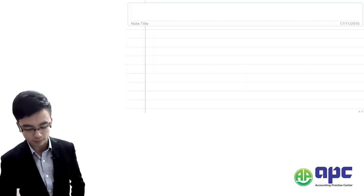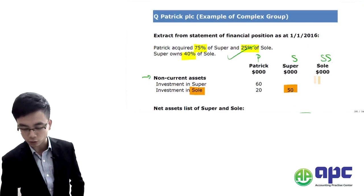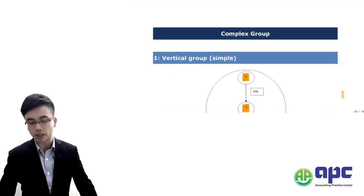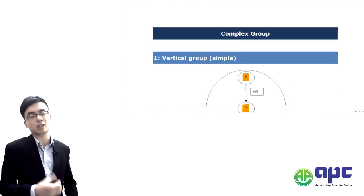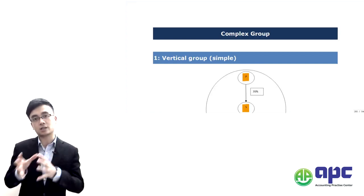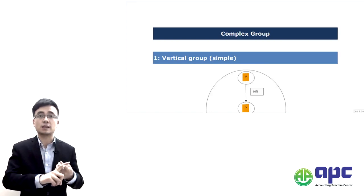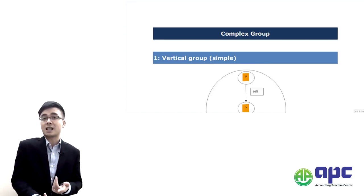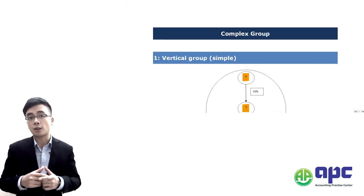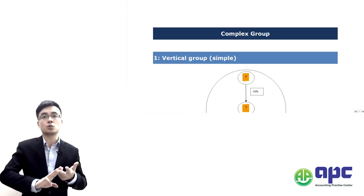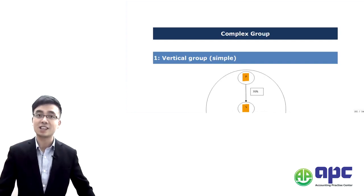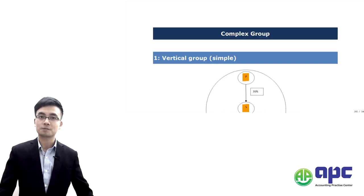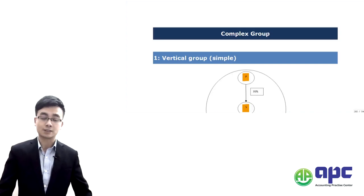To summarise: a complex group means there is a sub-subsidiary within the group. There are two major accounting differences from the simple group: first, apply the effective percentage when calculating the sub-sub's growth for NCI and reserves; second, debit the NCI in the subsidiary and credit the Goodwill in the sub-subsidiary. Everything else is the same as the basic group. In the next section, we'll work through a full example of a complex group consolidation.